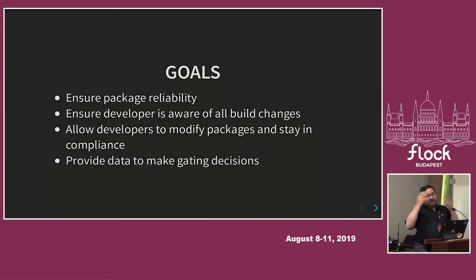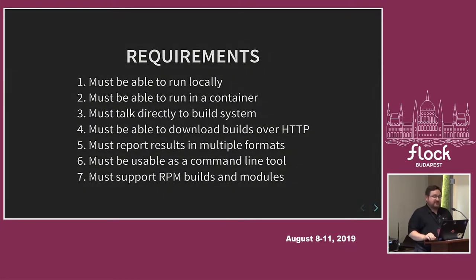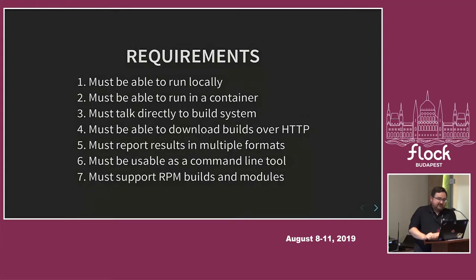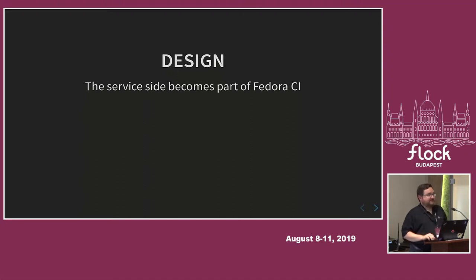Back to RPM Inspect. Going through all of that code, I thought it would be very difficult to make it usable in the Fedora space. The actual goals are: ensure package reliability, make developers aware of build changes, allow developers to modify packages and stay in packaging compliance, and provide data in a CI environment to make decisions. It needs to be able to run locally, run in a container, and do everything that RPM Diff can't do directly. The service side — the hub and worker — is being broken out and becoming part of Fedora CI. Tim has written that, and it runs in Fedora.